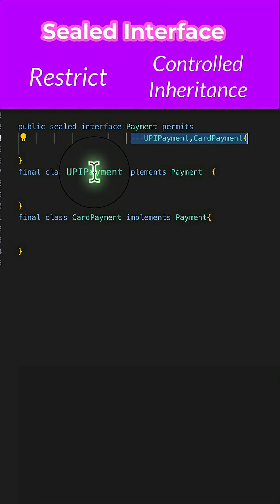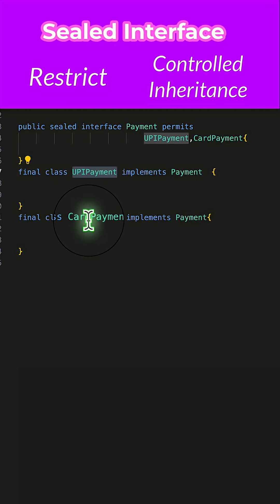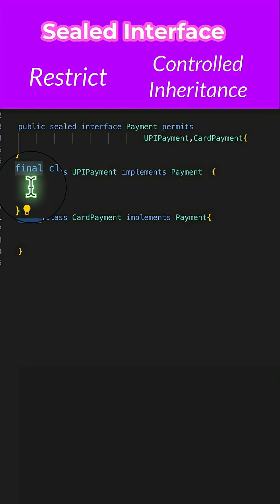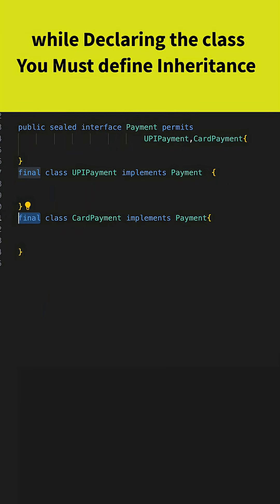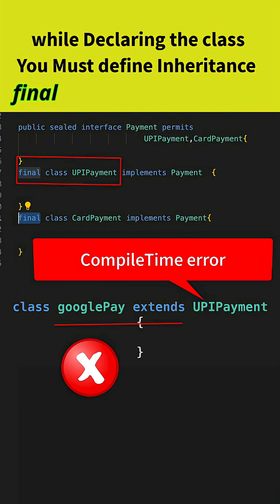Look at the implementing classes — UPI Payment and Card Payment. They are both marked as final. Why? Because Java says: define the inheritance hierarchy for this class at compile time, no surprises later. By marking these classes as final, you are saying these classes cannot be subclassed or extended later.